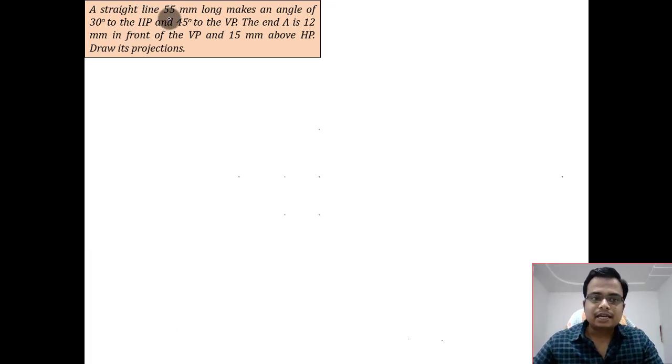We've got a straight line which is 55 millimeters long. The true length of the line is 55 millimeters. This line makes an angle of 30 degrees to the HP, so theta is 30 degrees, and 45 degrees to the VP, that means phi is 45 degrees.